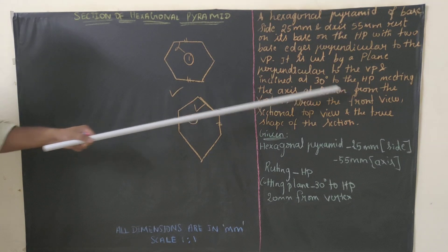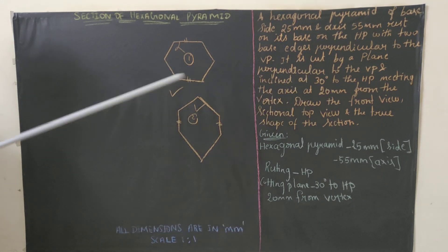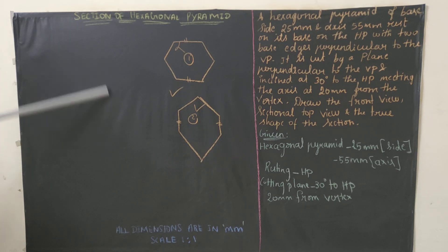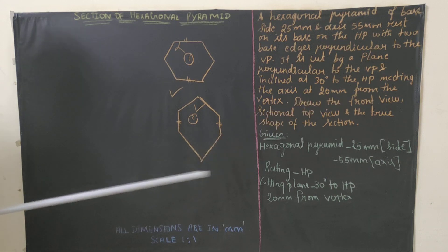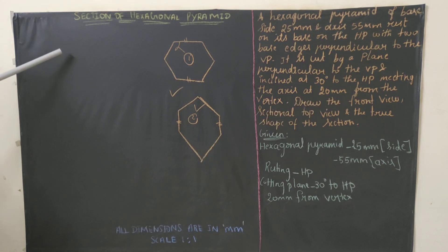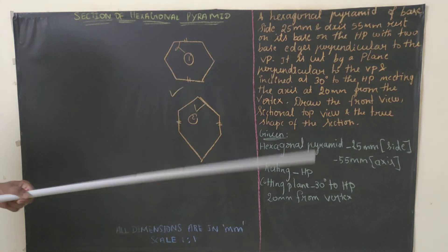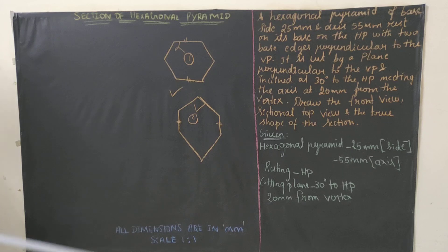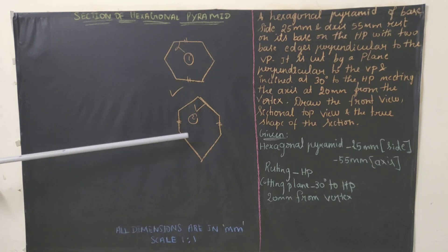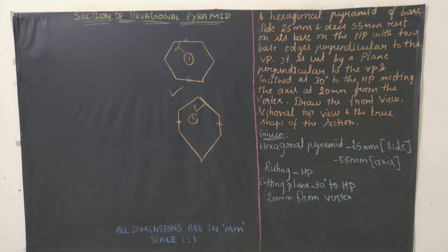The solid is cut by a plane perpendicular to VP and inclined 30 degrees to HP. We are going to draw the cutting plane in the front view, meeting the axis at 20mm from the vertex. We need to draw the front view of the section, the top view, and the true shape of the section. We will proceed with this second type of hexagon as the base diagram.